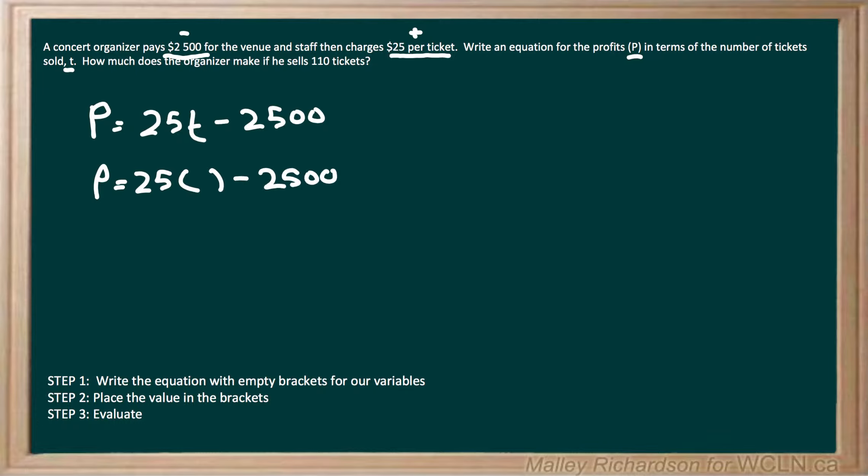Next let's move on to step 2, where we place our value in the brackets. Our value is given to us to be 110 tickets, so let's place 110 in our brackets. P equals 25 times 110 minus 2,500.